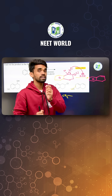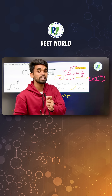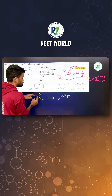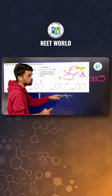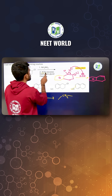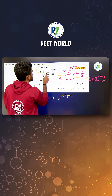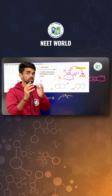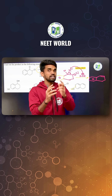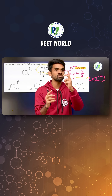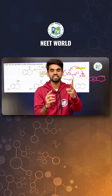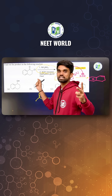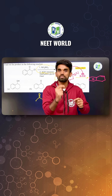Can you tell me the name of that reaction which is used for conversion of C double bond O to CH₂ using this particular reagent? We have something like Clemmensen reduction and Wolff-Kishner reduction. What exactly is the name of that reaction? Tell me in the comment box.